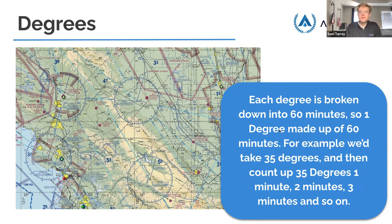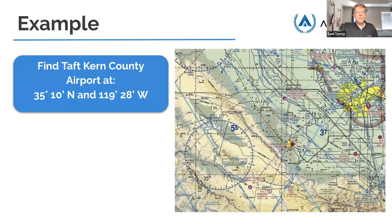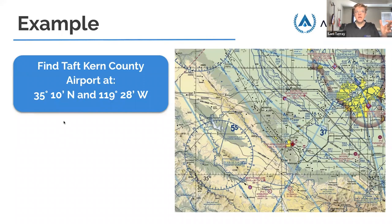Each degree is broken down into 60 minutes. So for example, you'd take 35 degrees and count up one minute, two minutes, three minutes all the way up to 60, and then it goes to 36 degrees. For notation: the degree symbol is used for degrees, and a single apostrophe represents minutes. For example, Taft Kern County Airport is at 35 degrees 10 minutes north and 119 degrees 28 minutes west.